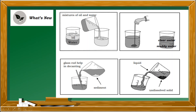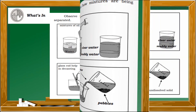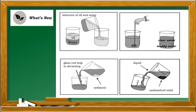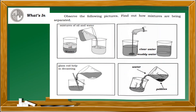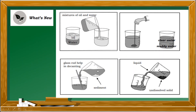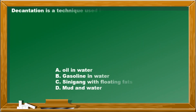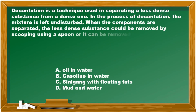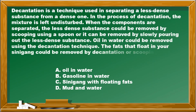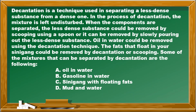We are now in 'What's New.' Key terms: sediment, undissolved solid. Decantation is a technique used in separating a less dense substance from a denser one. In the process of decantation, the mixture is left undisturbed. When the components are separated, the less dense substance could be removed by scooping using a spoon, or it can be removed by slowly pouring out the less dense substance.